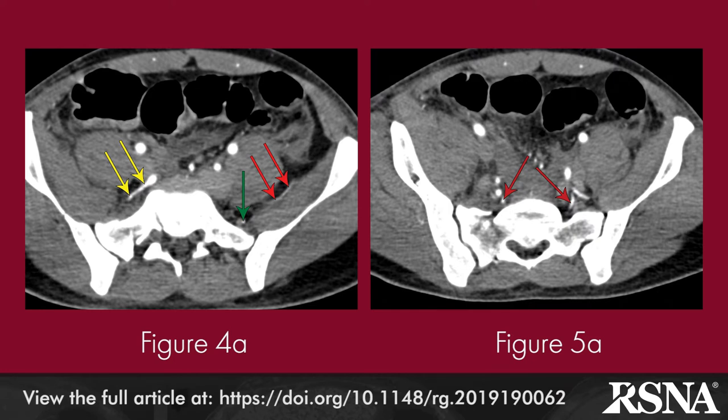Figure 5a. Axial CT angiogram in a 32-year-old man shows the lateral sacral artery as it descends ventral to the sacrum and lateral to the sacral foramina. Small branches are seen to enter into the sacral foramina (arrows).